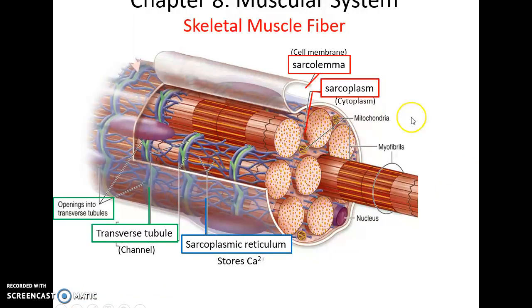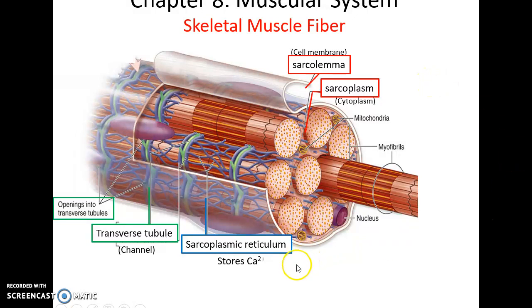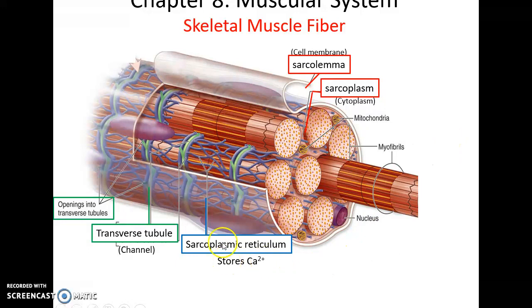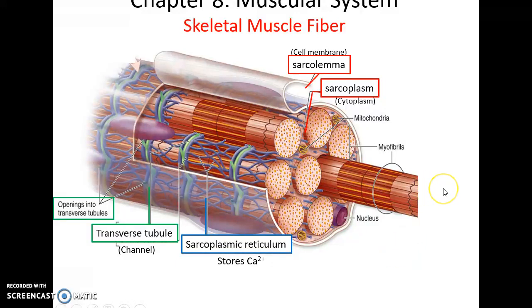Taking a closer look at a muscle fiber: the cell membrane of a muscle fiber is called the sarcolemma, and the cytoplasm is called the sarcoplasm. There is an invagination of the sarcolemma — basically a tunnel that passes through the width of the cell — called the transverse tubule. Another structure special to muscle fibers is the sarcoplasmic reticulum, a series of interconnected membranous structures that abut the transverse tubules and store calcium ions.